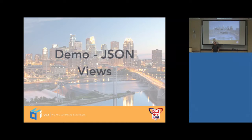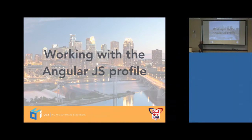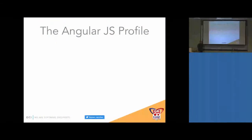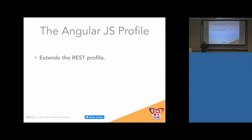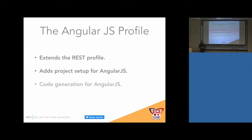So we've seen everything — the model, the controller, and the JSON views. Let's introduce the Angular part. We've got the REST API, but we'd like to have an AngularJS frontend to display that information. For this purpose, we have the AngularJS profile. The AngularJS profile extends the REST profile, so whatever you have in the REST profile, you also have in the Angular profile — JSON views, create-domain-resource, the create-RESTful-controller, everything. It's designed with the idea that you'll have a REST API and then an AngularJS frontend consuming it.